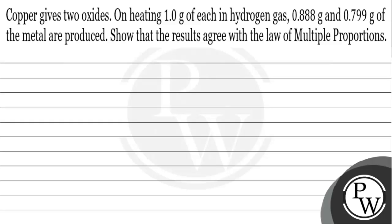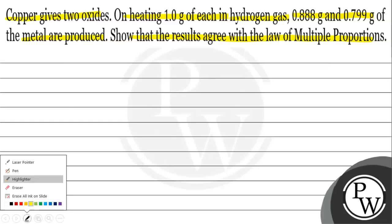Hello, let's look at this question. The question says copper gives two oxides. On taking one gram of each in hydrogen gas, 0.88 gram and 0.799 gram of copper are produced. Show that the results agree with the law of multiple proportion.